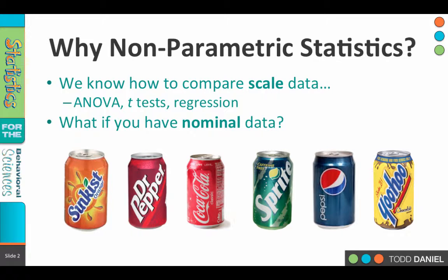Let's say we have a hundred or a hundred and twenty people. They would all choose their favorite. And at the end of that, what we would have are counts — how many people preferred the first type, how many people preferred the second type. But we wouldn't have scale data; we would have nominal data based upon the type of soda.